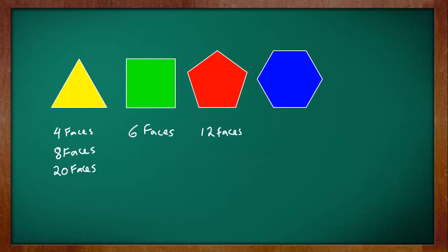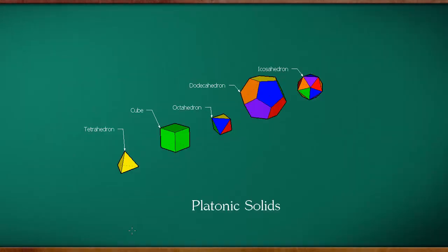In the thirteenth book, he talks about how there cannot be more than five regular solids, also known as Platonic solids. He says just as people believed before, there can only be five regular solids. One solid has four faces made of equilateral triangles. Another has eight faces of equilateral triangles, and another has twenty equilateral triangular faces. Then there is one with six square faces, and another with twelve regular pentagonal faces.